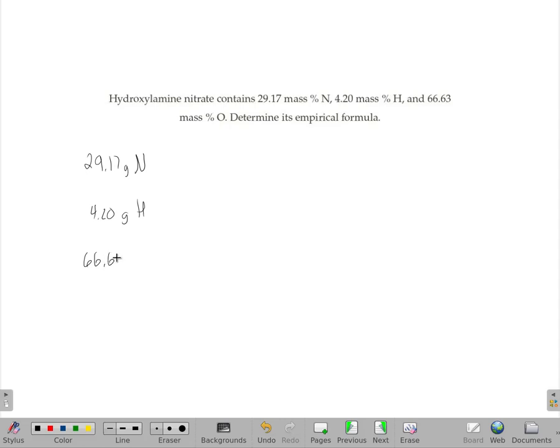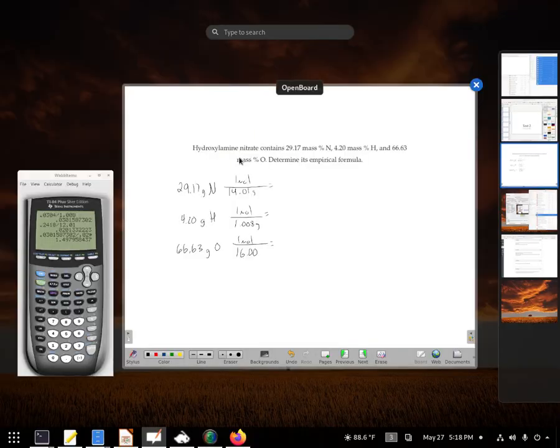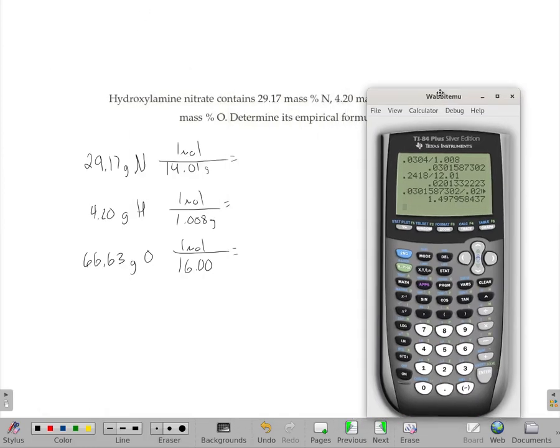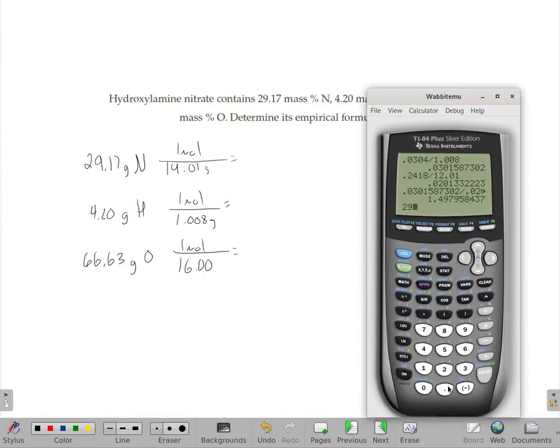And 66% or 66 grams of it is oxygen. Now I just need to convert those into moles. So 29 divided by 14 is roughly 2, but I want to get it exact. So 29.17 divided by 14.01, I get 2.082.